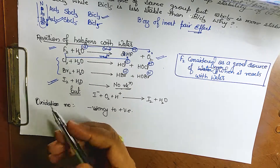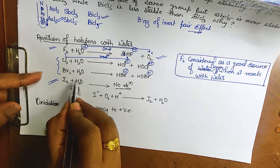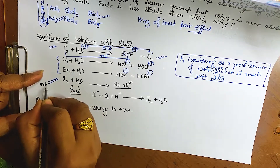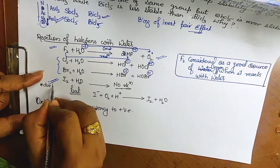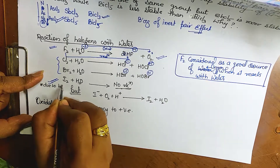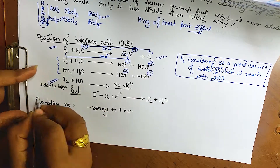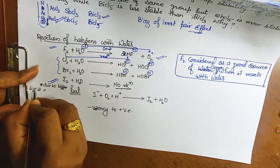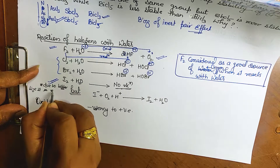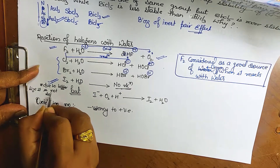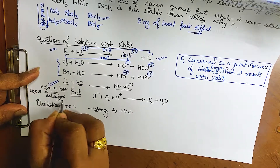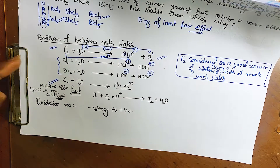The reason iodine does not react with water is due to the bigger size of iodine — it is not soluble in water. Because of this larger atomic size, iodine cannot dissolve, and therefore the reaction is not possible.